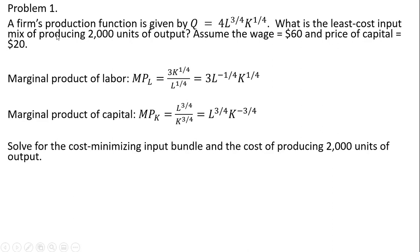Let's start with problem one. We have a firm's production function where Q is quantity of output, L is units of labor, and K is units of capital. We want to find the least cost input mix of producing 2,000 units of output, assuming the wage is $60 and the price of capital equals $20. The marginal product of labor — normally derived via a partial derivative of the production function with respect to labor — is given, and I'll move the denominator into the numerator using rules of exponents.